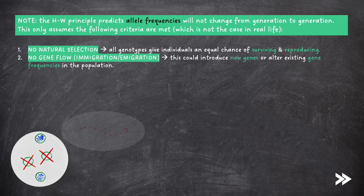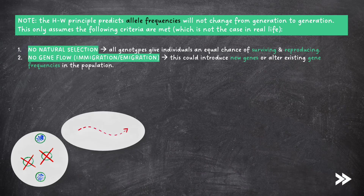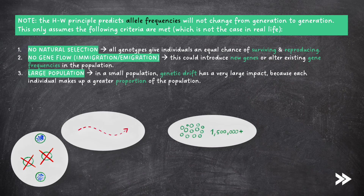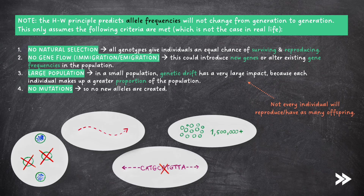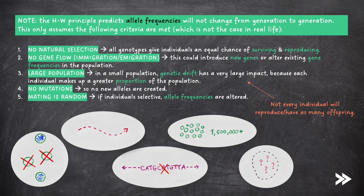It also assumes that there is no gene flow, i.e. no immigration or emigration, which could introduce new genes or alter existing gene frequencies in the population. We assume the population is large, as in a small population genetic drift has a very large impact because each individual makes up a greater proportion of the population. Genetic drift is the concept that allele frequencies in a population also change due to chance — for example, because not every individual will have offspring or the same number of offspring. Genetic drift will be covered in more detail in Topic 3.7.3. The Hardy-Weinberg principle also assumes that no mutations occur, so no new alleles are created. Finally, it assumes that mating is random, because if individuals are selective, allele frequencies are altered.